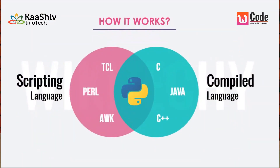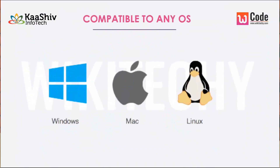In Python, we can find both the scripting language and compiled language. These are two types of languages. Scripting languages include TCL and Perl. Compiled languages include C and C++. Python is compatible with any OS — Windows, Mac, and Linux and all operating systems.